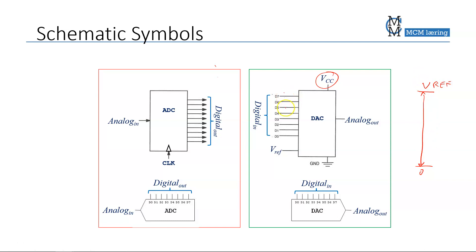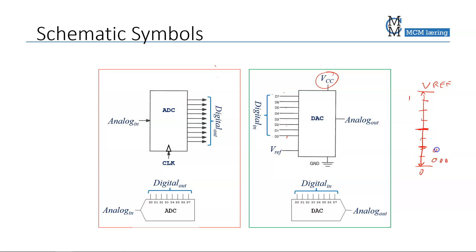The number of bits tells us how many levels we divide this voltage span into. With one bit, we can divide it into two regions: 0 and 1. With two bits, we get four levels: 00, 01, 10, and 11. With three bits, we get eight levels: zero through seven.